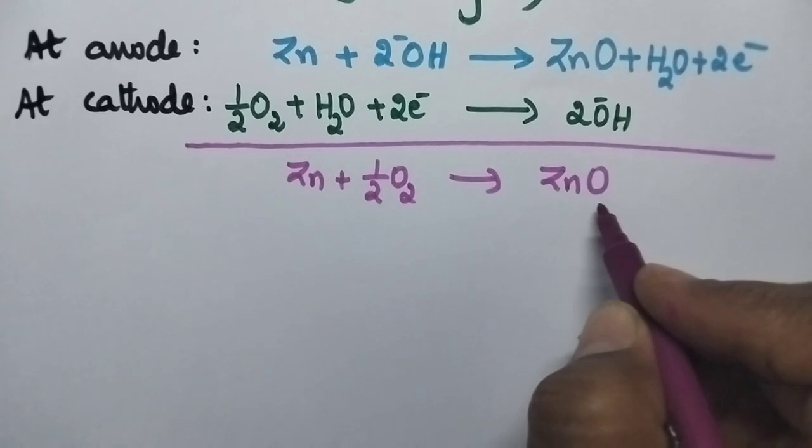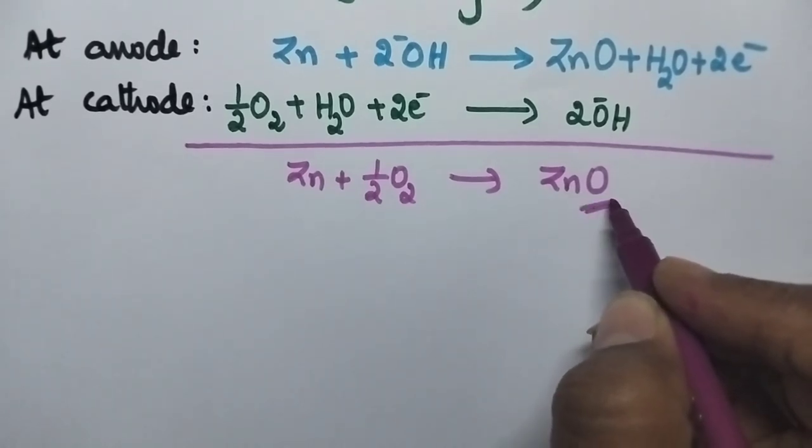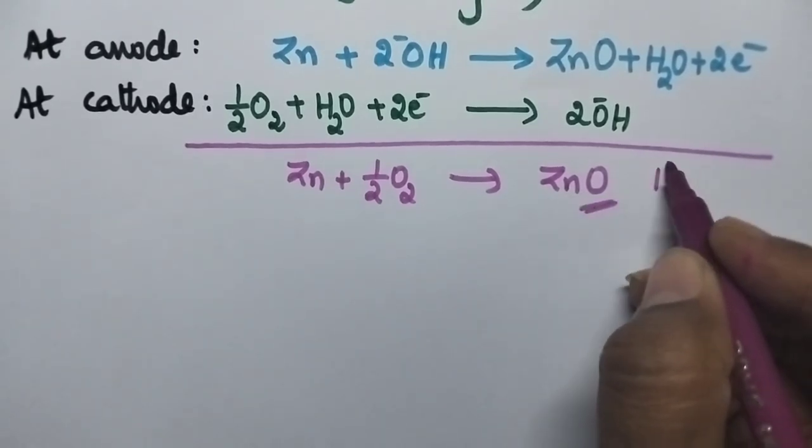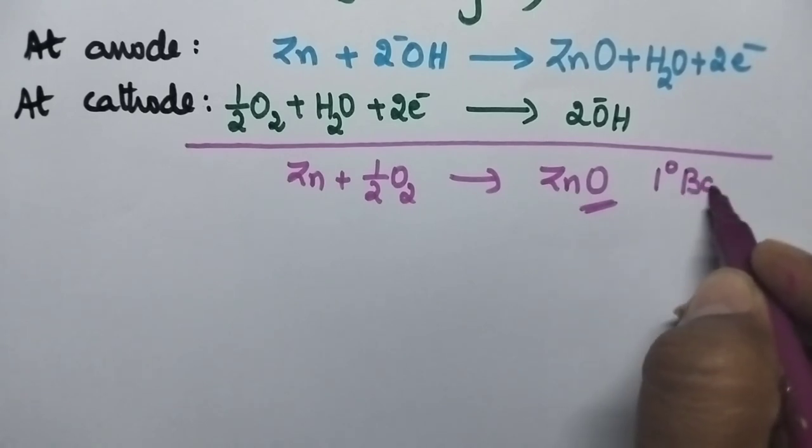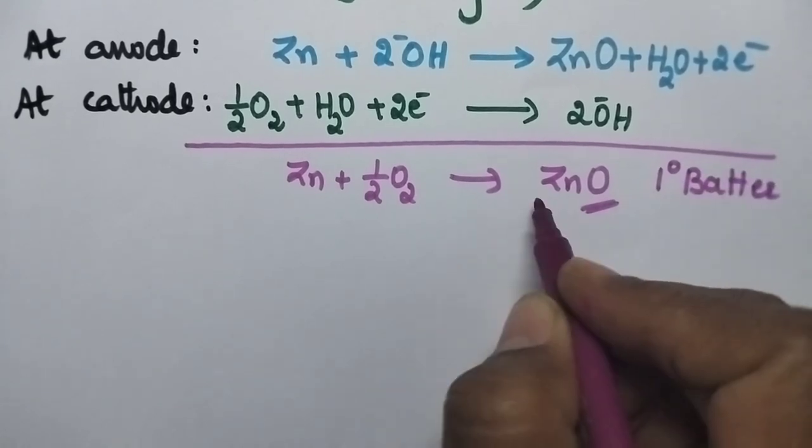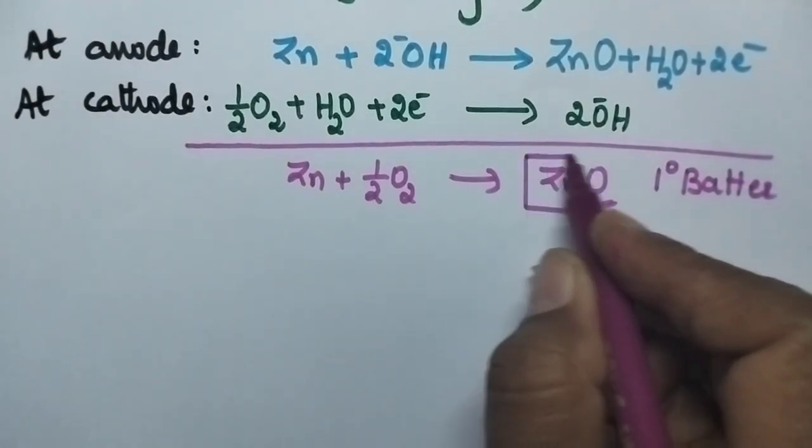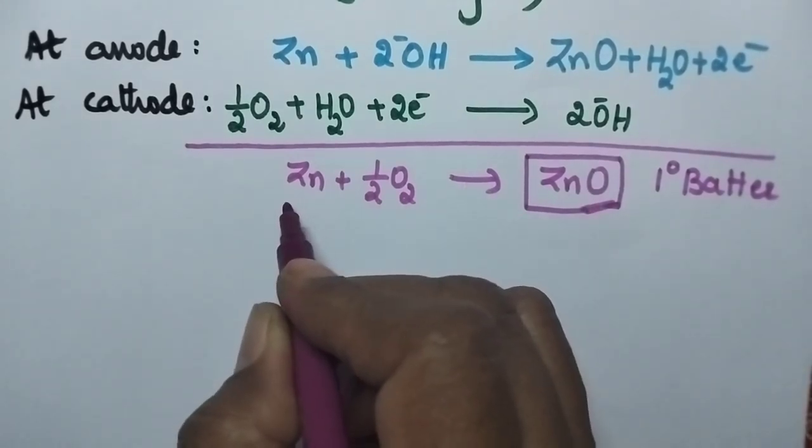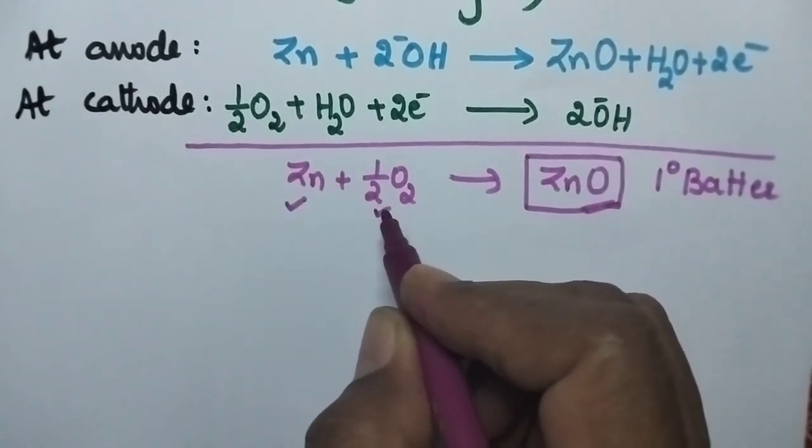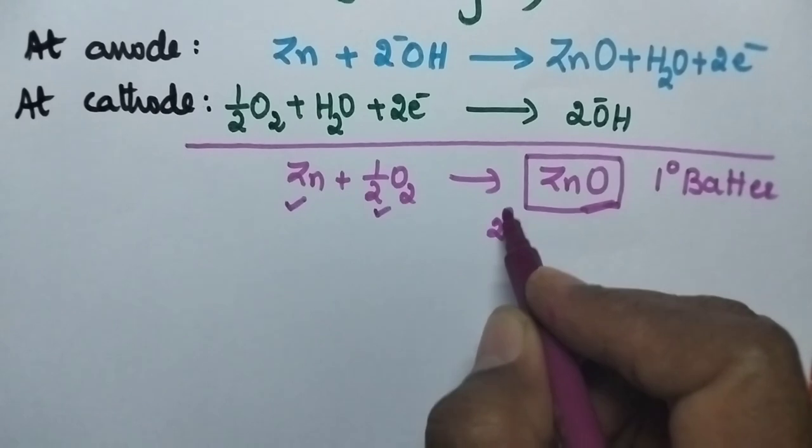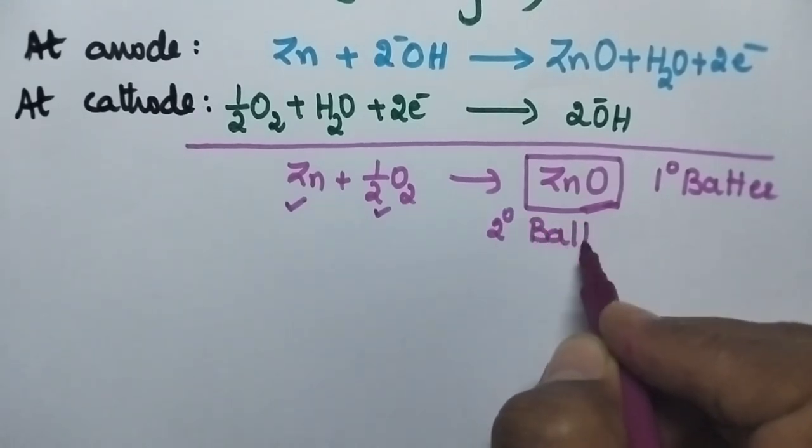So if zinc oxide is not decomposed then it will act as a primary battery. If the zinc oxide formed is decomposed back into zinc and oxygen, then this battery will act as a secondary battery.